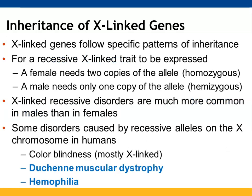When X-linked genes are inherited, they follow certain patterns. Females have to have two copies of a recessive allele to show that trait — they must be homozygous for it. But because males only have one X chromosome, they only need one copy of that recessive allele to show its phenotypic expression; they are hemizygous. So any X-linked recessive disorder is more likely to be found in males. Examples include colorblindness, Duchenne muscular dystrophy, hemophilia, and baldness.